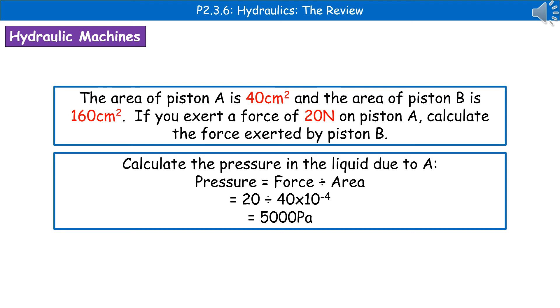The next thing is we're going to calculate the pressure in the liquid due to A, because we've got both a force and an area for that. So pressure is force divided by area, but remember, because it's in centimeters squared, we need to convert to meters squared.